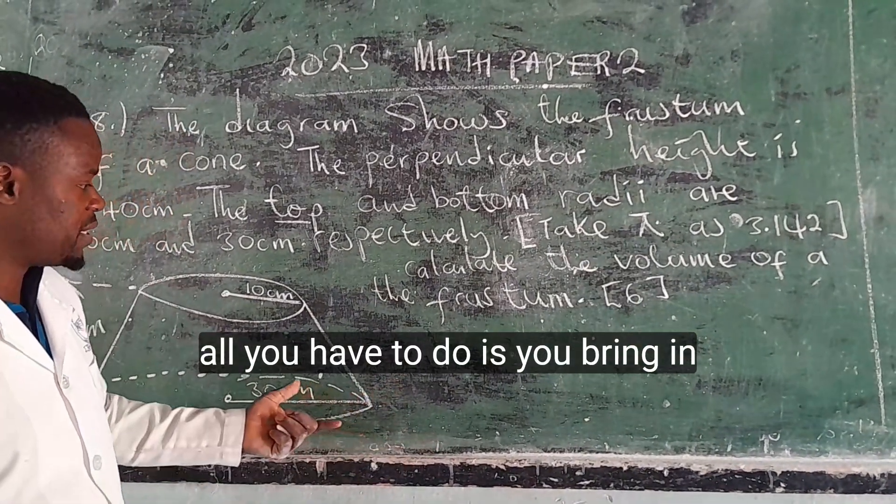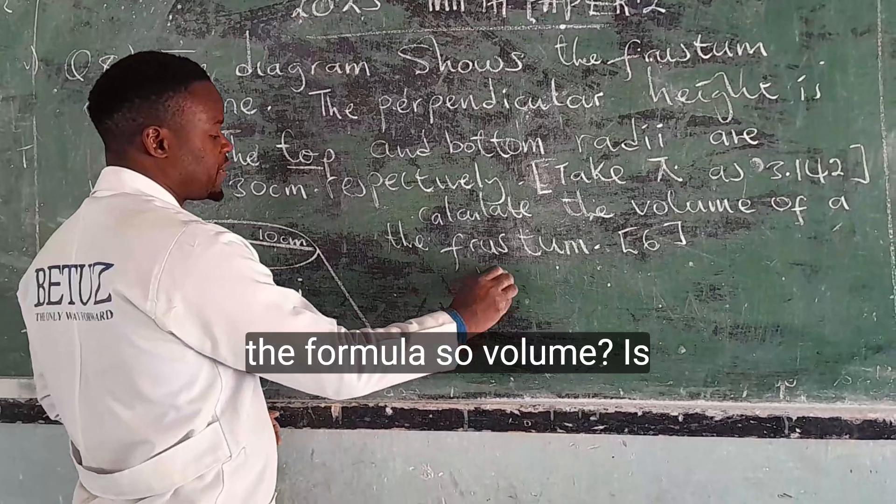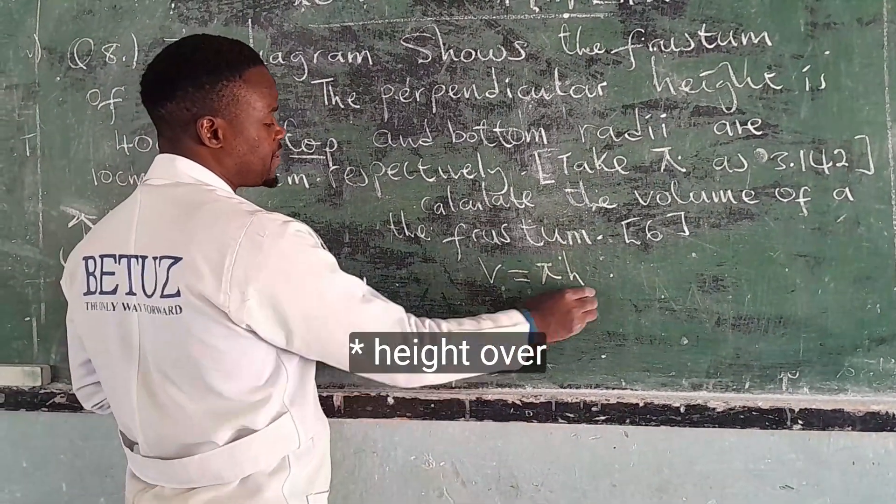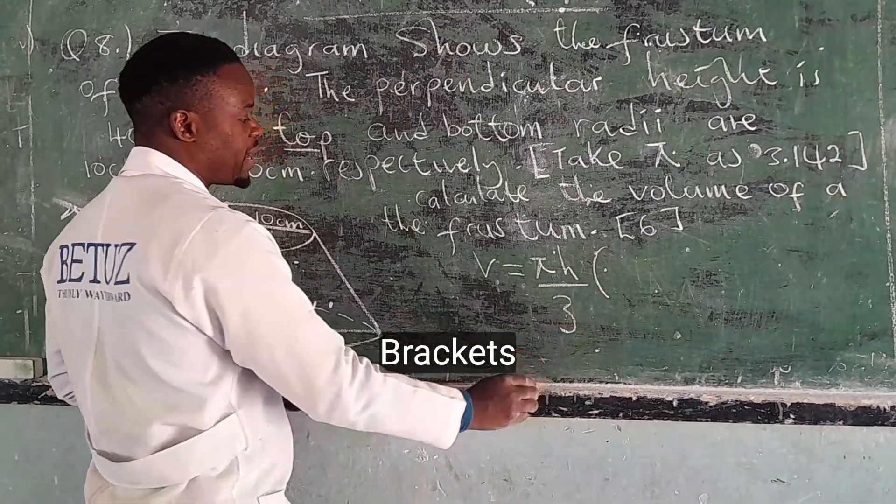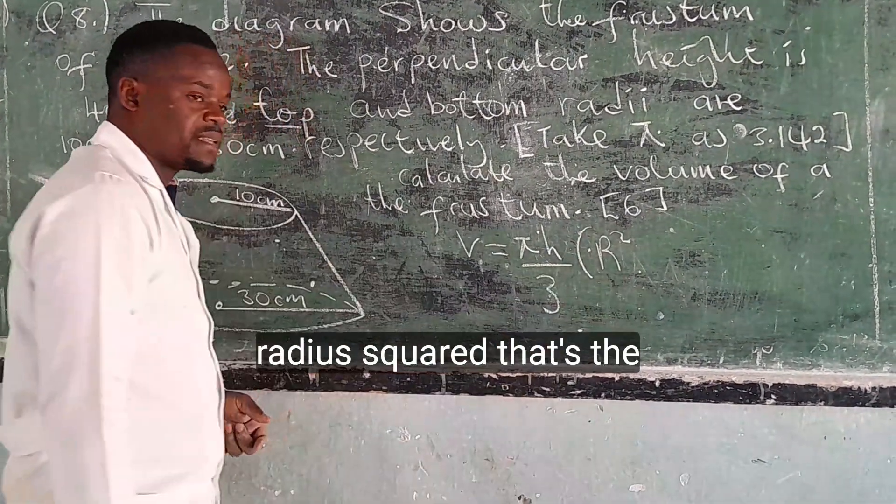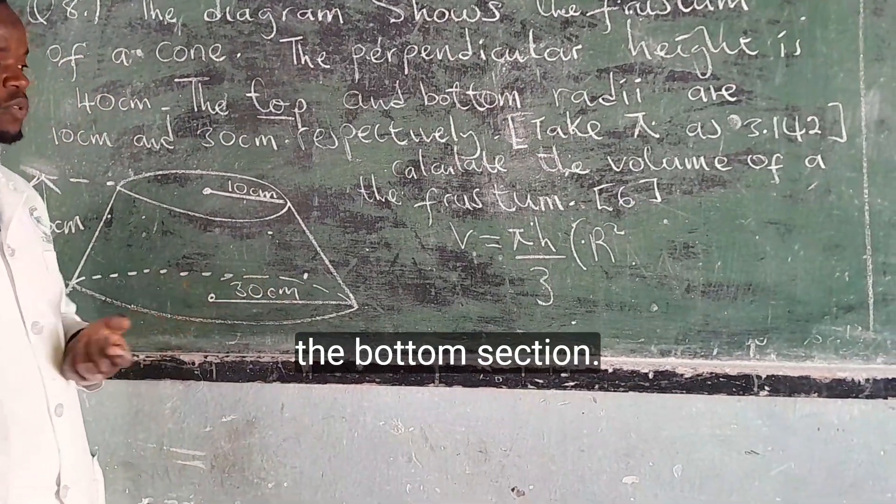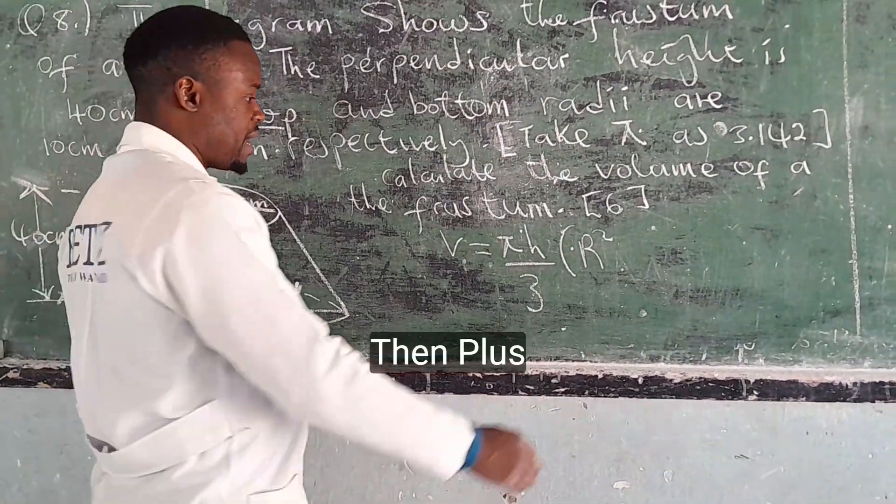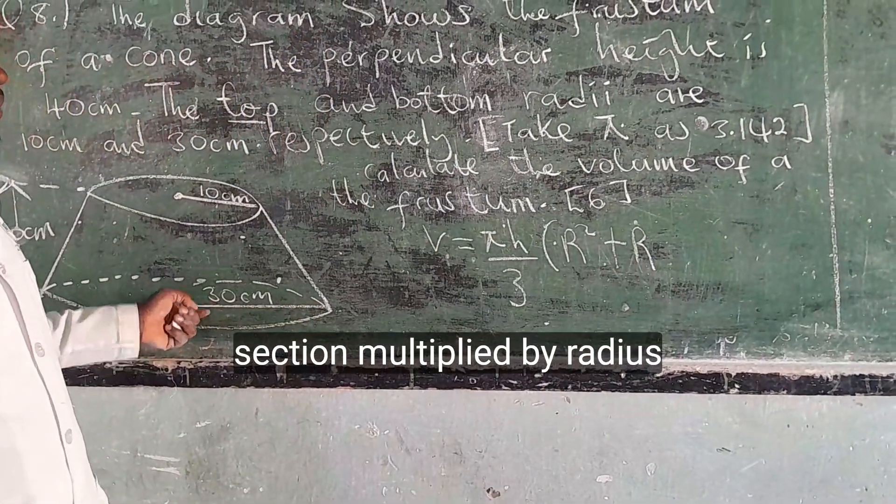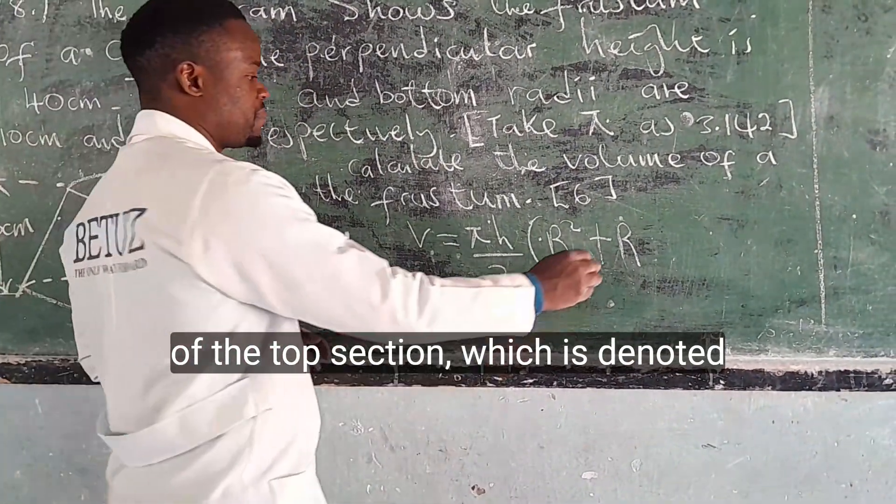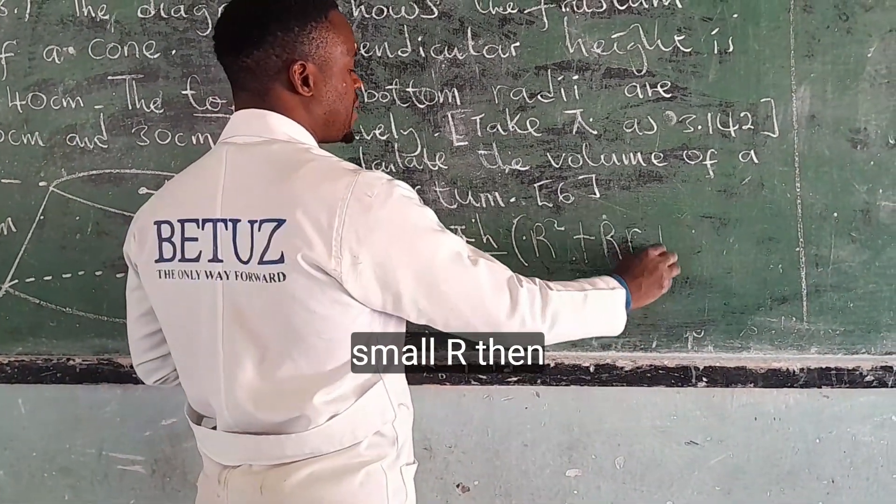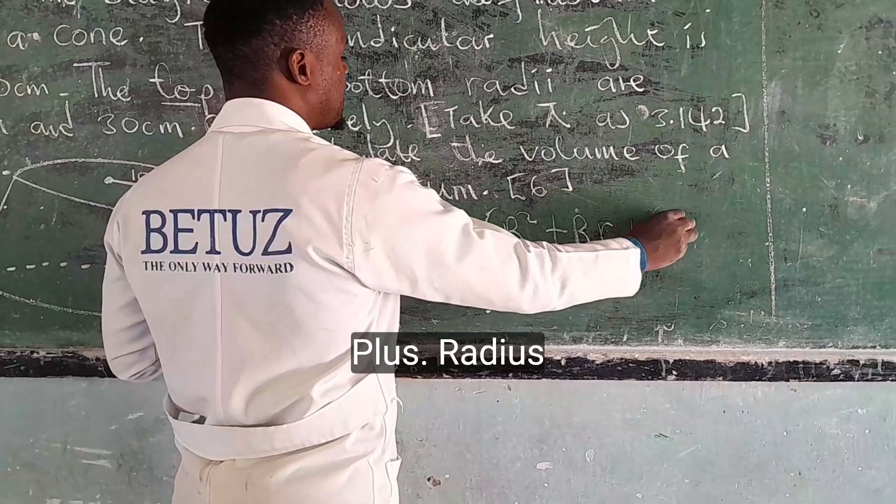So then how do you find the volume of the frustum? All you have to do is bring in the formula. So volume is given by pi times height over 3, then in brackets, radius squared, that's the radius of the bottom section, then plus radius of the bottom section multiplied by radius of the top section, which is denoted by the small r, then plus small radius squared.